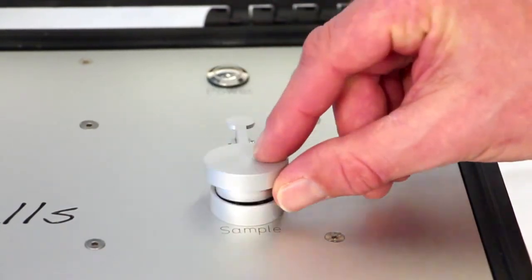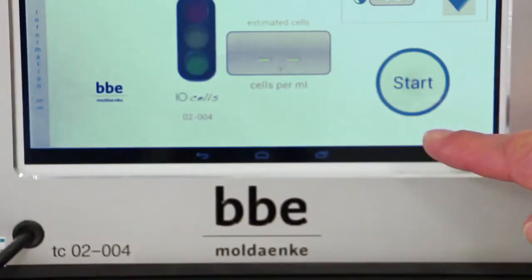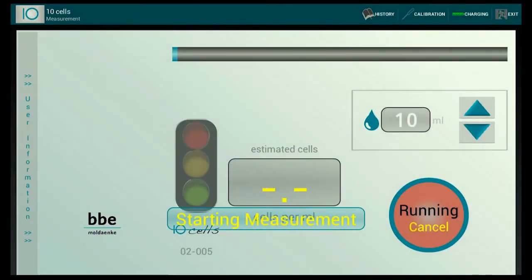Close the cap of the slot and start the measurement by pressing the start button on the display. The measurement needs approximately one minute. Then you can read the result.